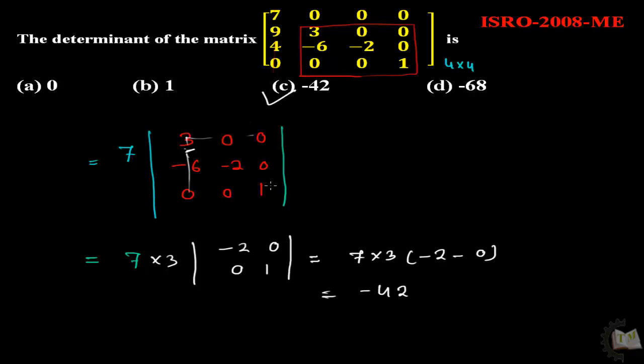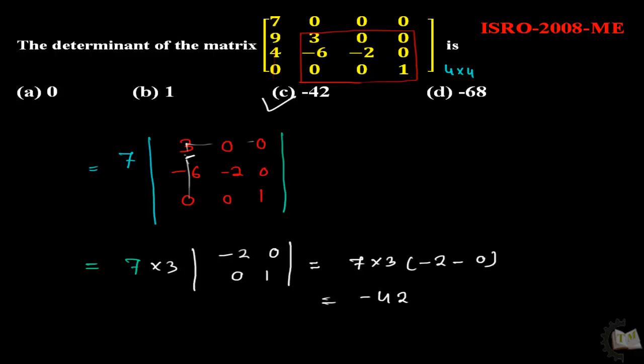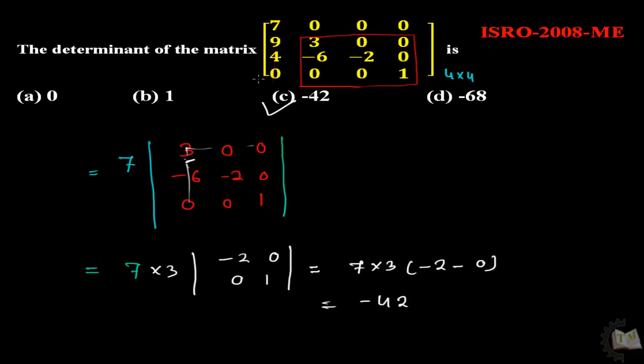But we can solve this question in very few seconds. Just observe this question. Observe the determinant. What type of determinant is it? This is a lower triangular matrix.